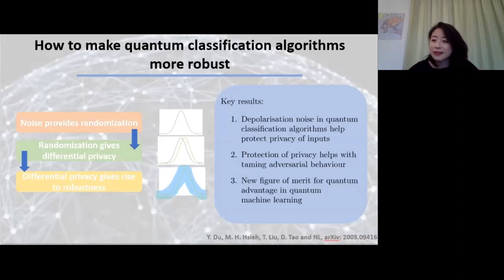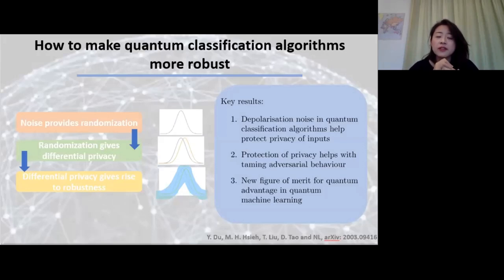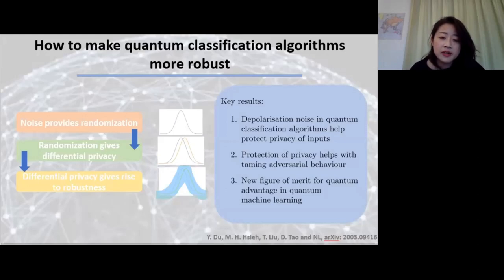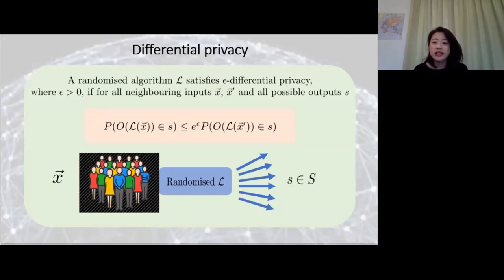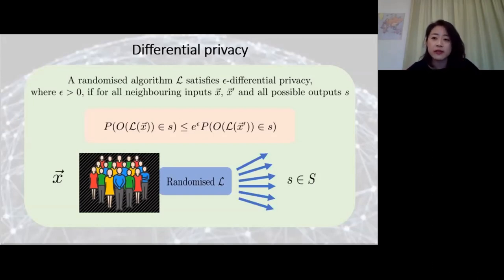So let me talk about this concept of differential privacy, first in the classical case. There are a lot of different concepts of privacy, and differential privacy is one particular definition. This naturally occurs in distributed settings. Suppose we have some central server—say a government—who wants to collect data from the population, whether average height or some more sensitive medical data. They want to perform an algorithm such that citizens are willing to send in their data so the government can get all the data it wants, but without exposing the details of individual data.